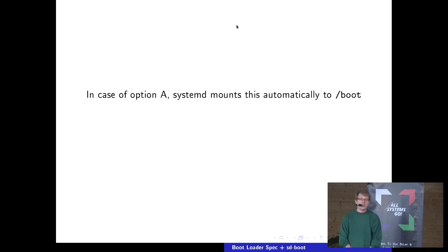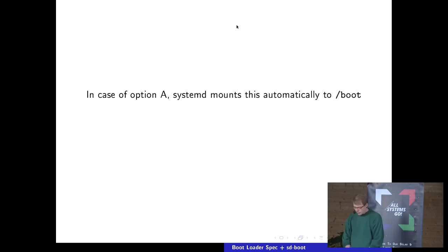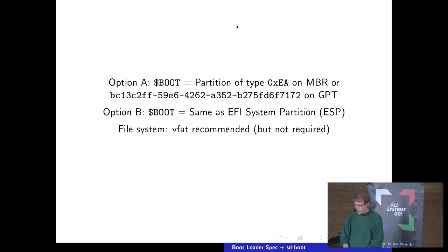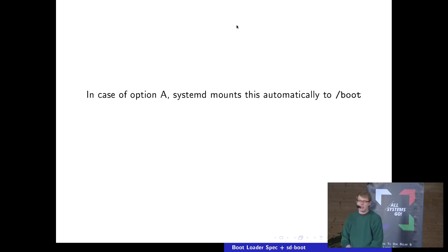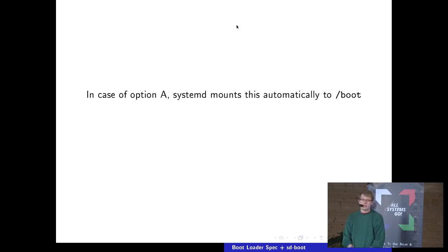These snippets each define a boot menu item — like the menu grub shows you where you select what you want to boot. Each snippet defines one of those. As a side note, if you actually use the GPT partition with that UUID value or the MBR marker, then systemd actually mounts this automatically at /boot, which is really nice because it makes things very robust and you don't have to have an fstab entry.